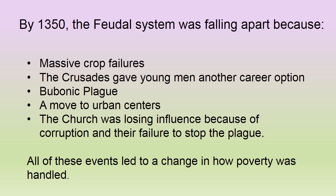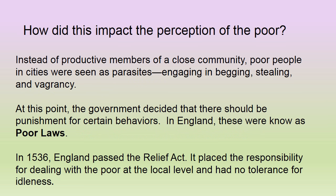People saw this as God turning his or her back on the church because the church was so corrupt. All of these events led to a change in how poverty was being handled. Instead of productive members of a close community, poor people in cities were seen as parasites engaging in begging, stealing, and vagrancy. At this point, the government decided that there should be punishment for certain behaviors. In England, these were known as poor laws.